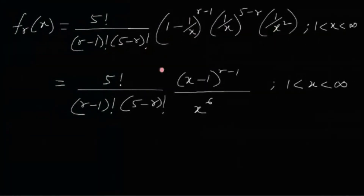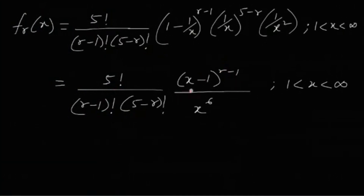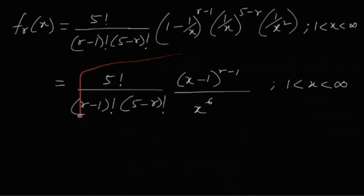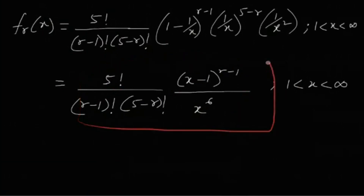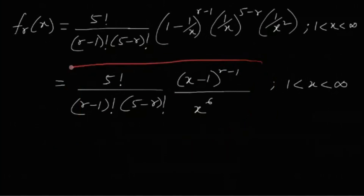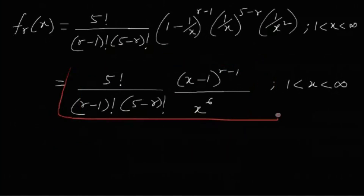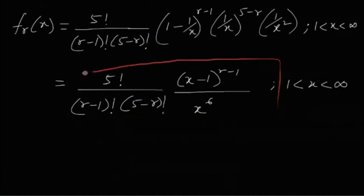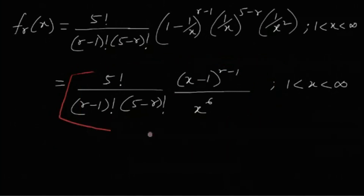Substituting, this ultimately becomes: f_r(x) = 5! / [(r−1)! · (5−r)!] · (x−1)^(r−1) / x^6. This is the PDF of the rth order statistic.